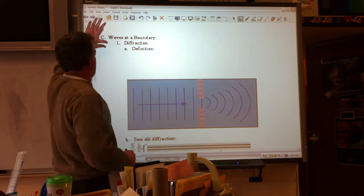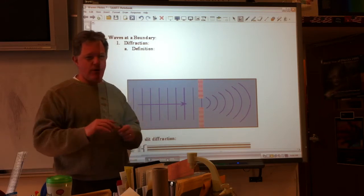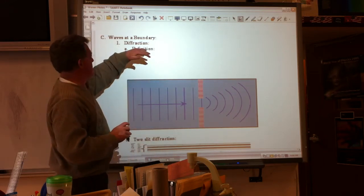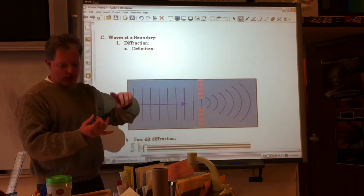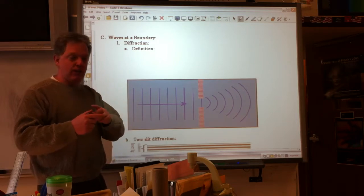Okay, so we're going to start talking about when waves encounter a boundary, and there's a number of things that can happen. The one we're going to talk about first is called diffraction, but there's also going to be reflection and refraction, dispersion and diffusion.